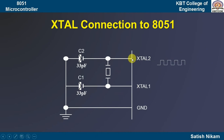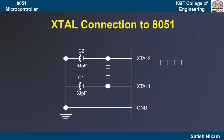Looking at the connection: XTAL1 is pin number 19 and XTAL2 is pin number 18. This portion is actually the crystal oscillator. Capacitors C1 and C2 of 33 picofarad are connected here. These capacitors are used as a filter — whatever clock frequency we are getting is supposed to be very specific, so any noise must be filtered out. Capacitors C1 and C2, each 33 picofarad, are connected to pins 18 and 19, with the other terminal connected to ground.